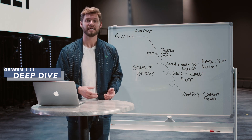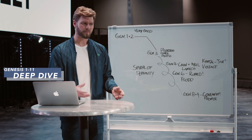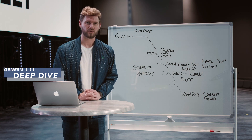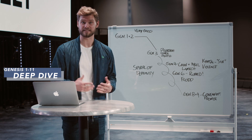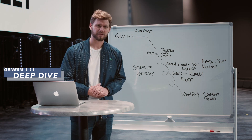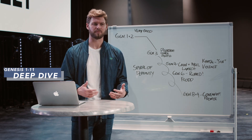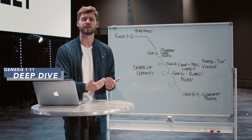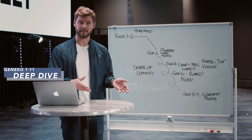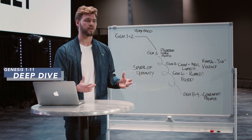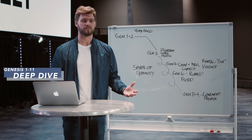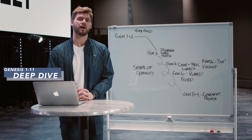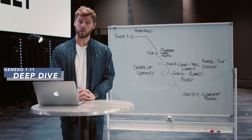The ground is cursed, the serpent is cursed first, and the male and female's lives become much harder. Shame enters the world, they're afraid to be in front of God, they're afraid to be vulnerable in front of each other. Ultimately death is introduced — the tree of life symbolizing immortality, a gift of God to his images, is taken away — and they're banished east of the Garden of Eden.